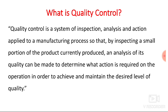Now we will discuss what quality control is. Quality control is a system of inspection — it is a department in an industry, a system of inspections where whatever you are producing has to be inspected. Quality control is a system of inspection, analysis, and action applied to the manufacturing process, so that by inspecting a small portion of the product currently produced, an analysis of its quality can be made to determine what action is required on the operations in order to achieve and maintain the desired level of quality.